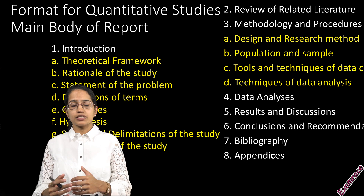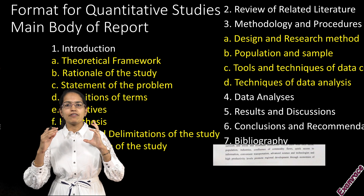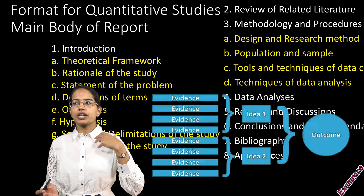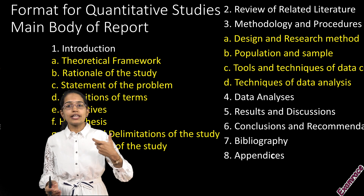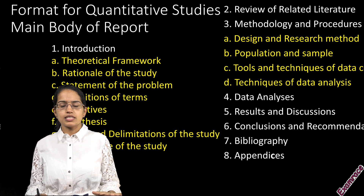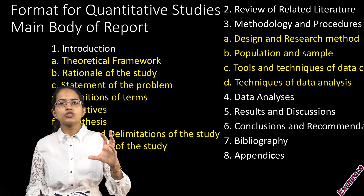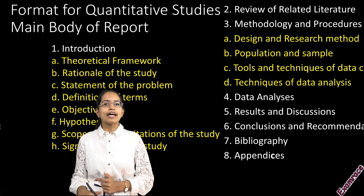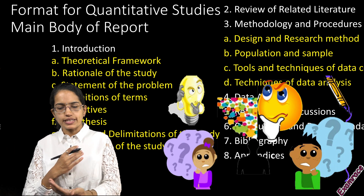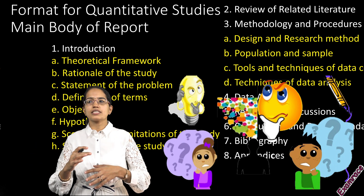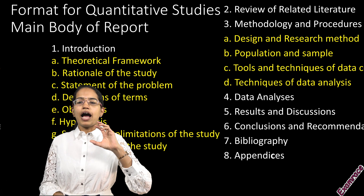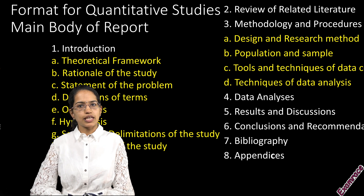The next is the format of a quantitative research main body. You would have an introduction. For quantitative research, what would the introduction include? Firstly, there would be a theoretical framework — why you need to study this, what problem you are trying to address. You would define certain terms that are difficult for a common person to understand, then lay down the objectives. Based on those objectives, you would have a tentative solution in mind — that would be your hypothesis. Towards the end, in your results, you would see whether you are accepting or rejecting the hypothesis. You would understand the scope and limitations of the study, and finally why this study is important and how future researchers can gain from it.